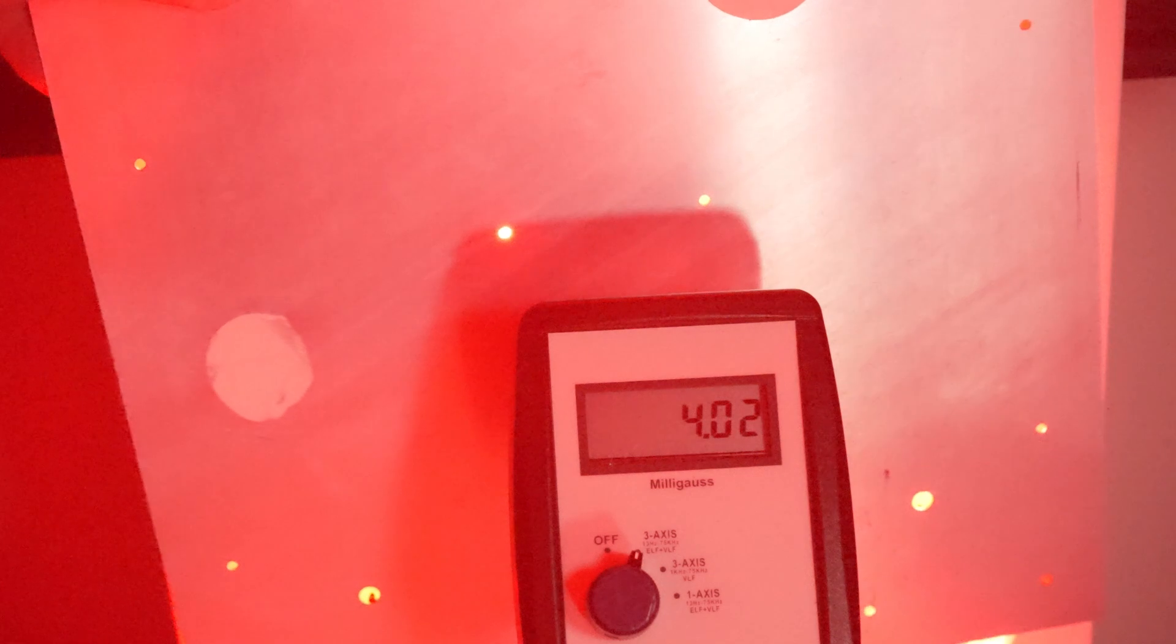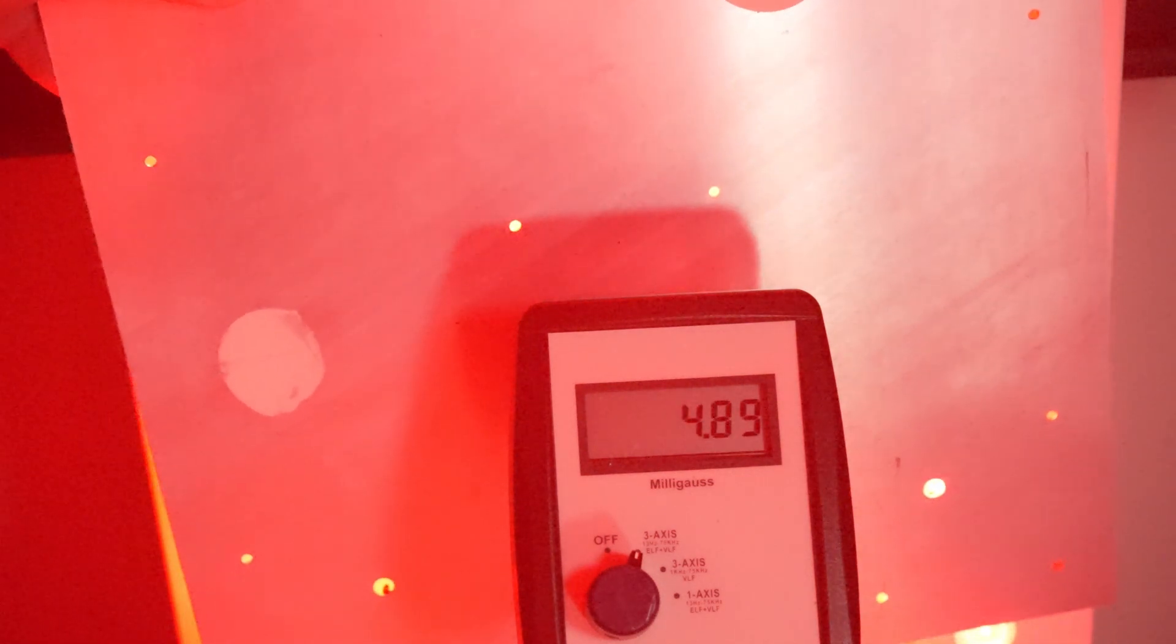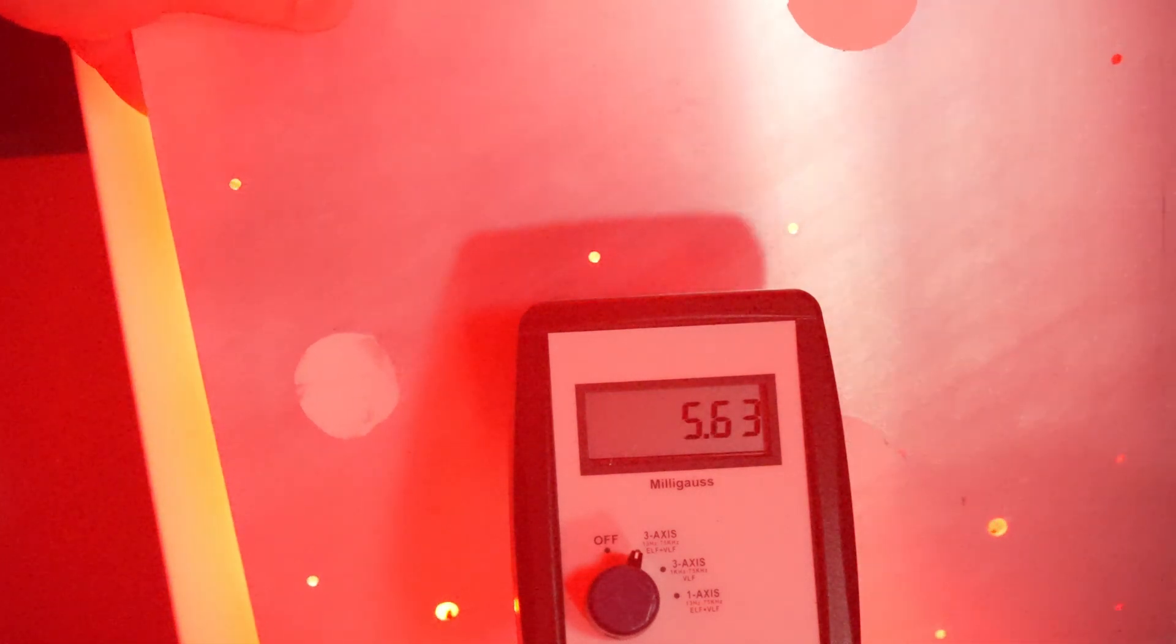That's why distance, the inverse square law, applies to EMFs as well as light because they're both electromagnetic frequencies. The inverse square law is your best protection against magnetic fields: increase your distance away because it's very hard to block it.